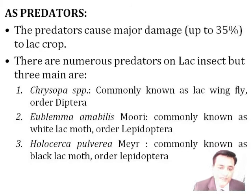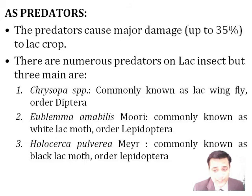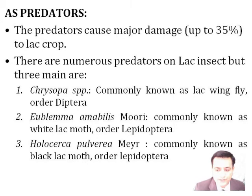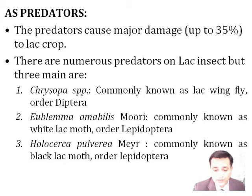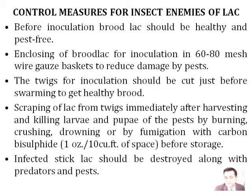As predators, insects can cause major damage — up to 35 percent — to lac crops. There are numerous predators on lac insects. The three main ones are: Chrysopa species, known as lacewing fly, from order Diptera; Eublemma amabilis, known as white lac moth, a disastrous predator for lac culture; and Holcocera pulverea, known as black lac moth, from order Lepidoptera.